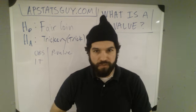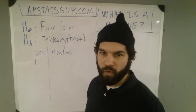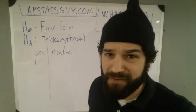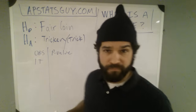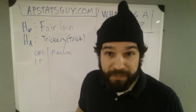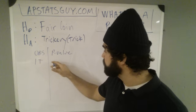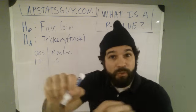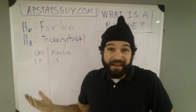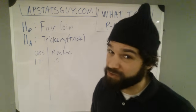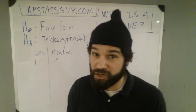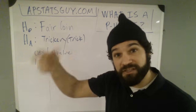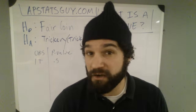Do you think this is a trick coin? Is there some trickery going on, or do you think it's a fair coin? Well, if the null were true — if that was a fair coin — that happens half the time. I'm not convinced it's a trick coin right now. And that's good reasoning. But that's what that p-value is: it's the likelihood of this thing occurring if the null were true, if it were a fair coin.